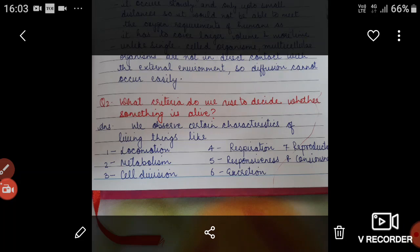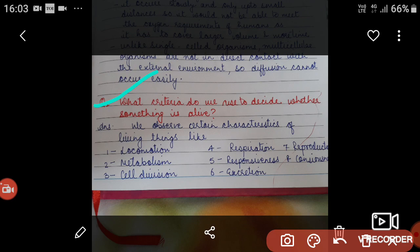Hello everyone, welcome to my channel. So our today's question is: what criteria do we use to decide whether something is alive? The answer is we observe certain characteristics of living things like locomotion, metabolism, cell division, respiration, responsiveness, excretion, reproduction, and consciousness.